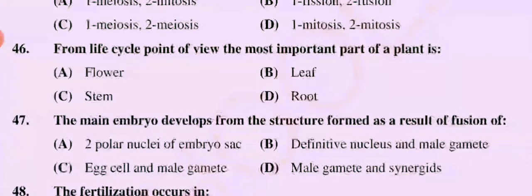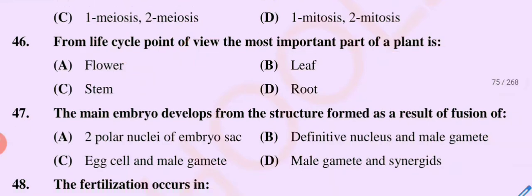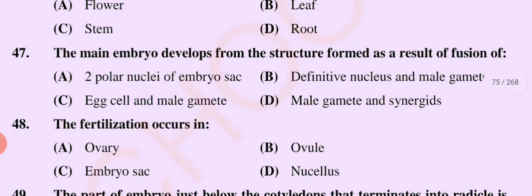Bismillahirrahmanirrahim, Assalamu Alaikum dear students. Today we will discuss from question number 46. From a life cycle point of view, the most important part of a plant is: option A flower, option B leaf, option C stem, and option D root. The correct option is option A, flower.